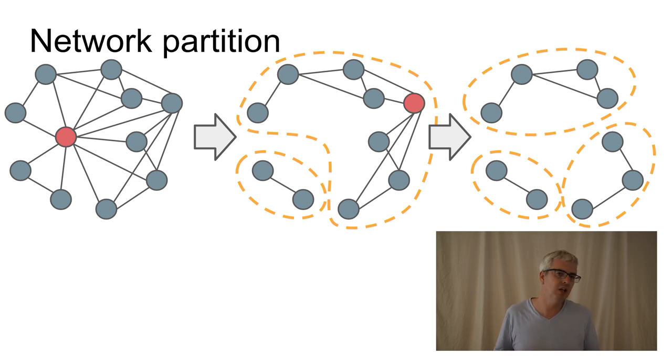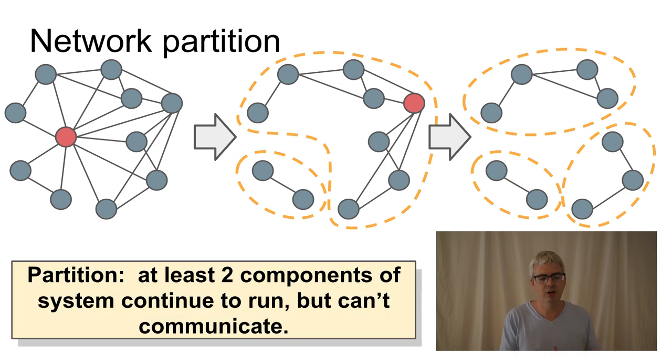Just to define our terms, a partition is when you have a distributed system and at least two components of the system continue to run, but they can't talk to each other. Often a partition is a temporary state until a network failure or node failure resolves itself, but we have to really understand partitions in order to design a robust algorithm that can successfully work and do the right thing.